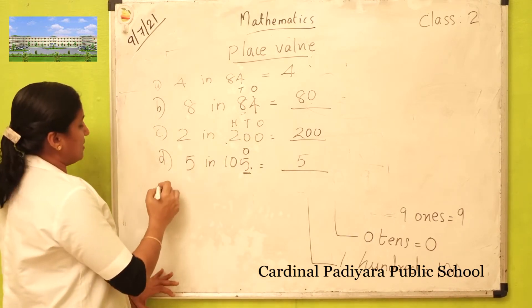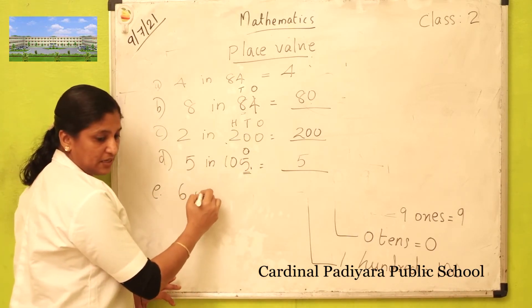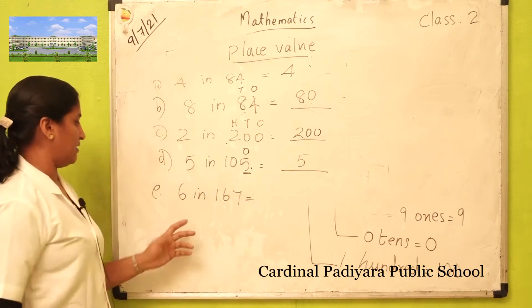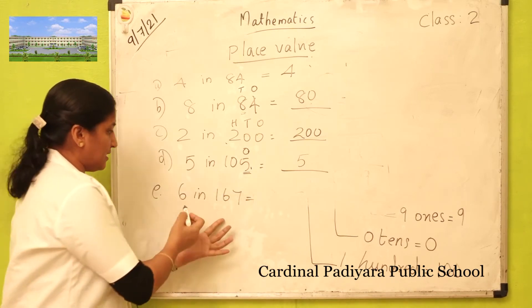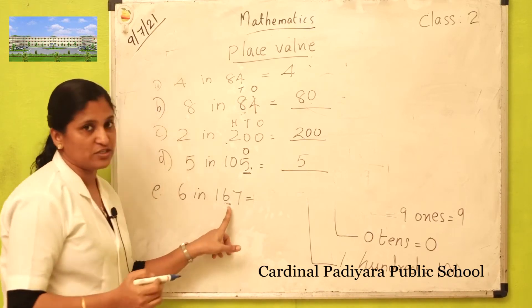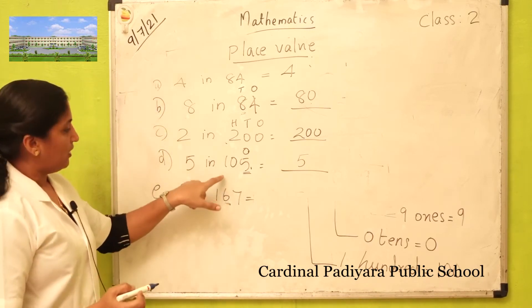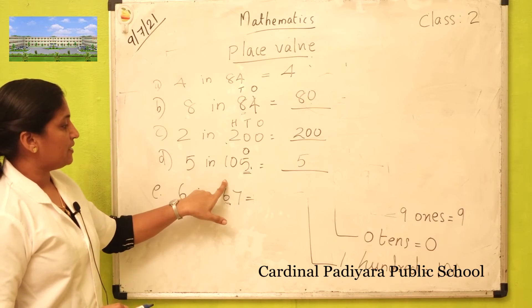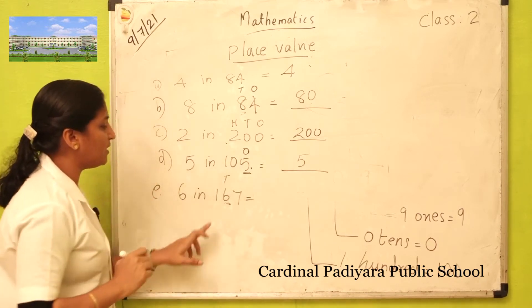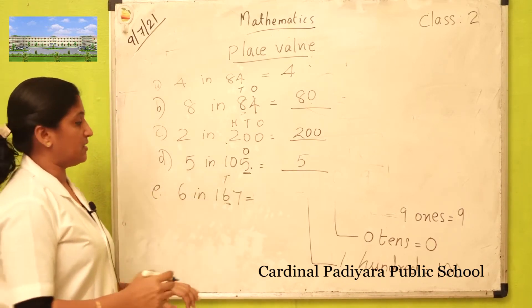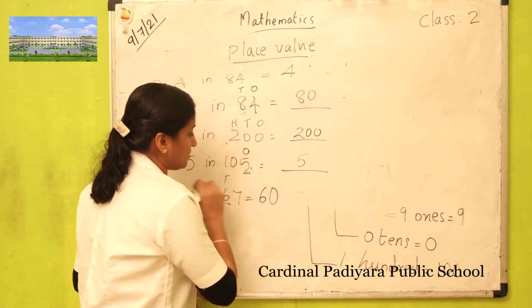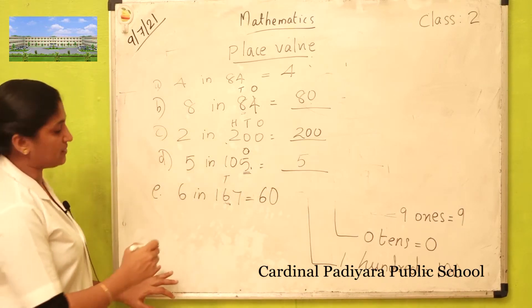Question number E: six in 167. In this number, six is in which place? The middle place — that is tens. How many tens? Six tens. Six tens is sixty.